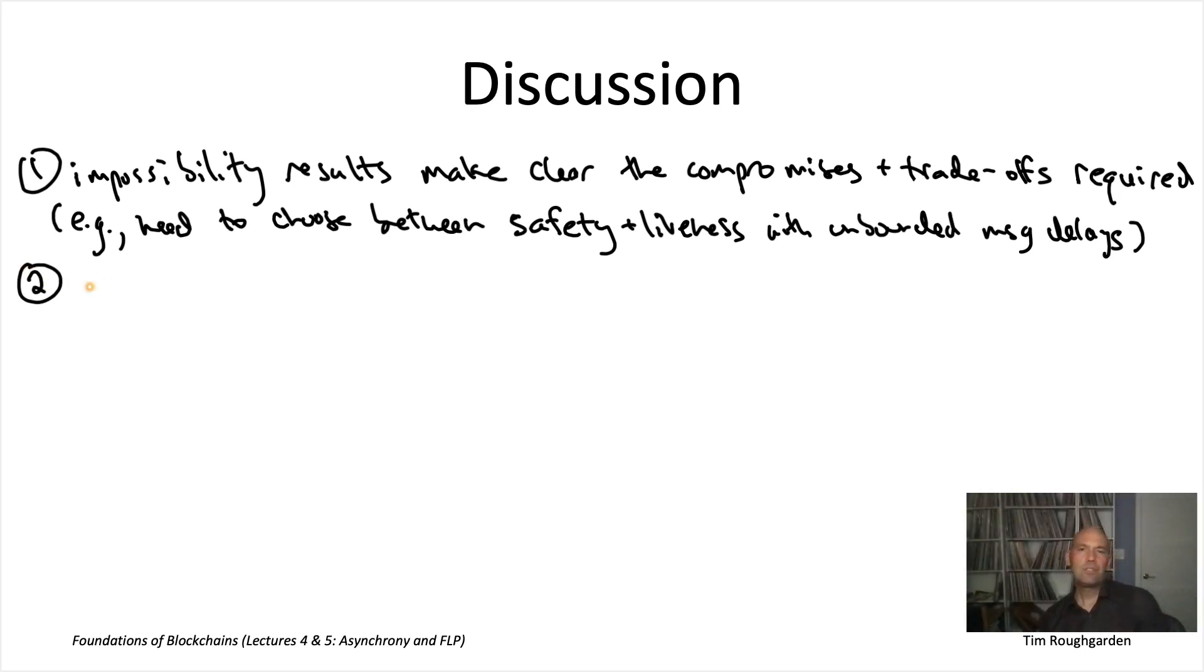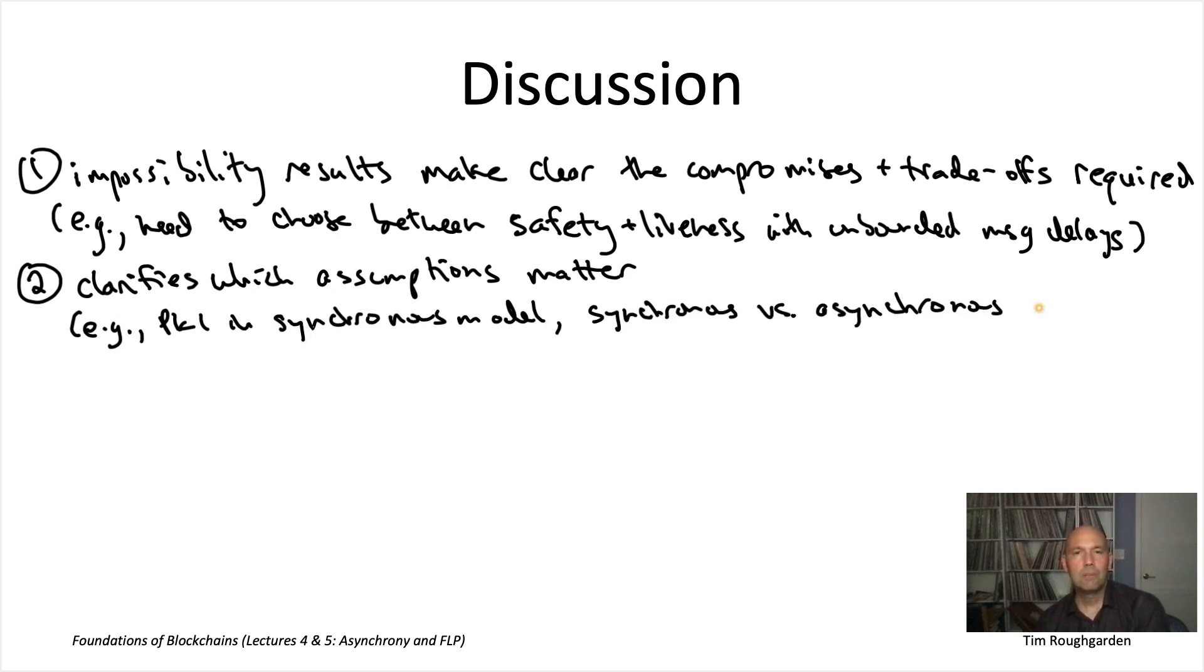A second reason impossibility results like this are super important is they clarify which assumptions matter. In lectures two and three, we learned that in some cases, the public key infrastructure or PKI assumption really matters. What you can accomplish, at least in the synchronous model, is fundamentally different.